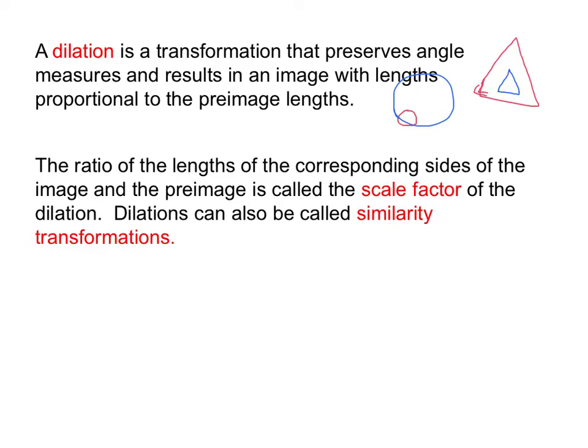You can also have dilations that go from bigger to smaller. You can go small to big and big to small. I shouldn't just assume we're only talking about one thing. Continuing on, the ratio of the lengths of corresponding sides of the image and the pre-image is called the scale factor. We've talked about scale factor already, but now we're using scale factor, talking about the lengths of corresponding sides of the image and the pre-image. Dilations can also be called similarity transformations. So we're using scale factor with our dilations today.